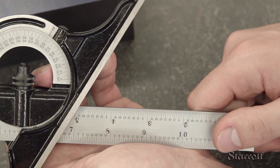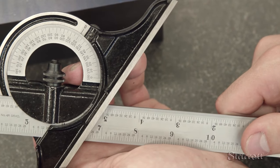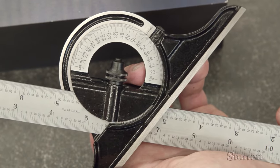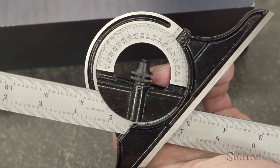The protractor head is most widely used to check angles. Portable and accurate, it is very useful for incoming inspection of large parts with many different angles.